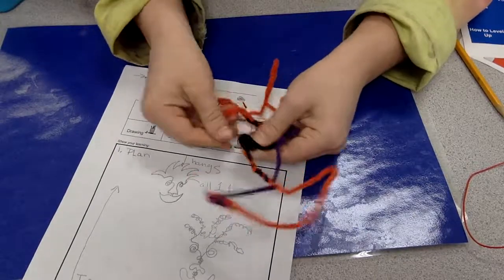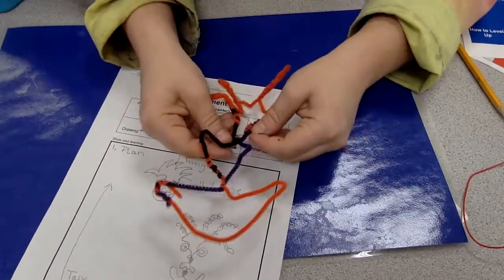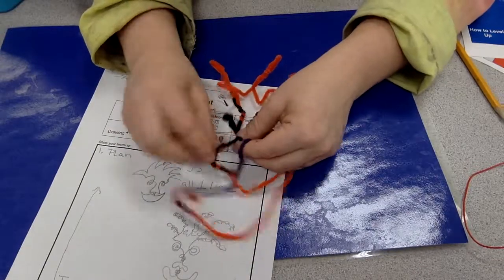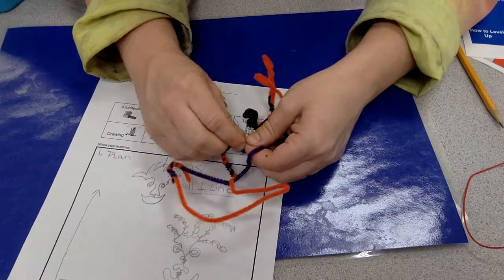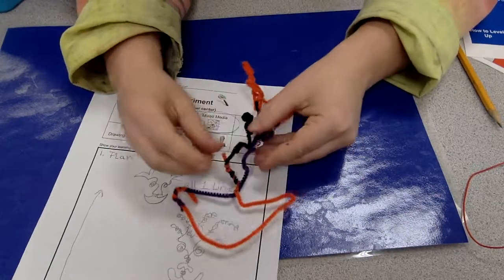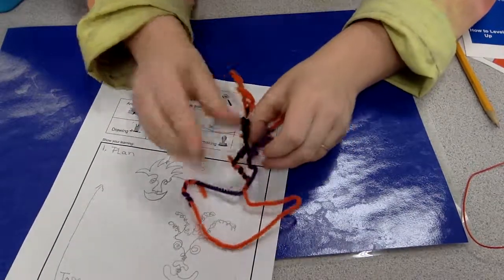You know, if something feels too big, the beauty of wire is you squish it and you wiggle it. You can even double it. If you're like, oh, I have too much wire here, you can just double it in on itself and make less wire.